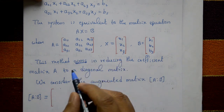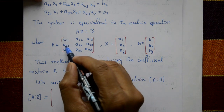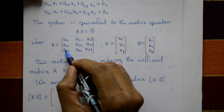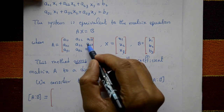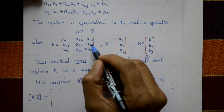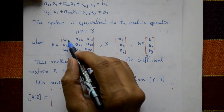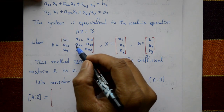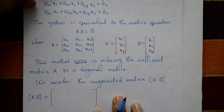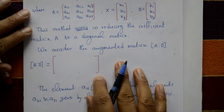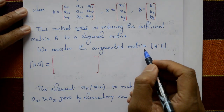The Gauss-Jordan method aims at reducing the coefficient matrix A to a diagonal matrix. This means the non-diagonal elements a21, a31, a32, a12, a13, a23 should all be made zero. Only the diagonal elements are required; all non-diagonal elements must be zero.